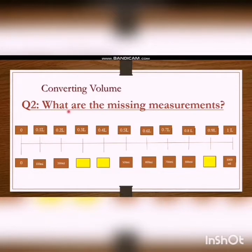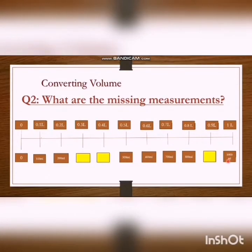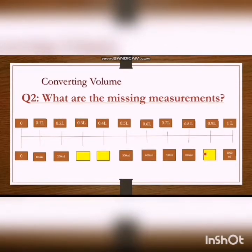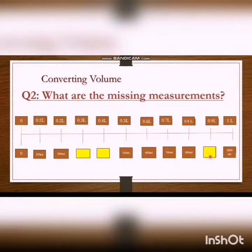Converting volume. Question number 2: What are the missing measurements? I start my work from the greater value. We know that 1 liter is equal to 1000 ml. When we convert 0.8 liters into ml, we multiply 0.8 by 1000 and we get 800 ml. Similarly, when we convert 0.7 liters into ml, we multiply by 1000 and we get 700 ml.